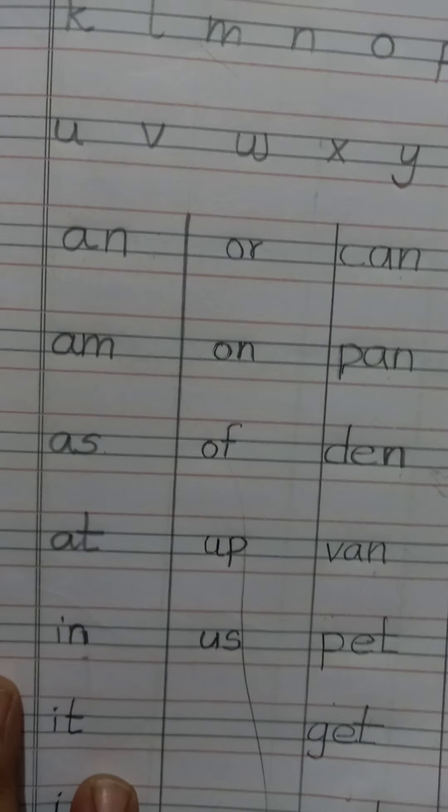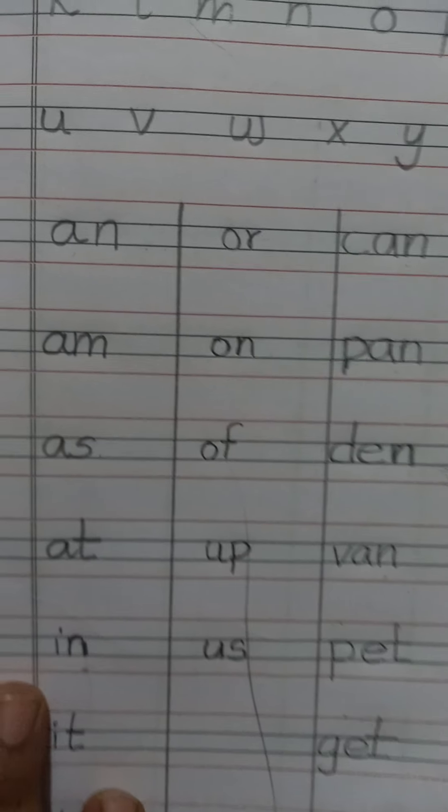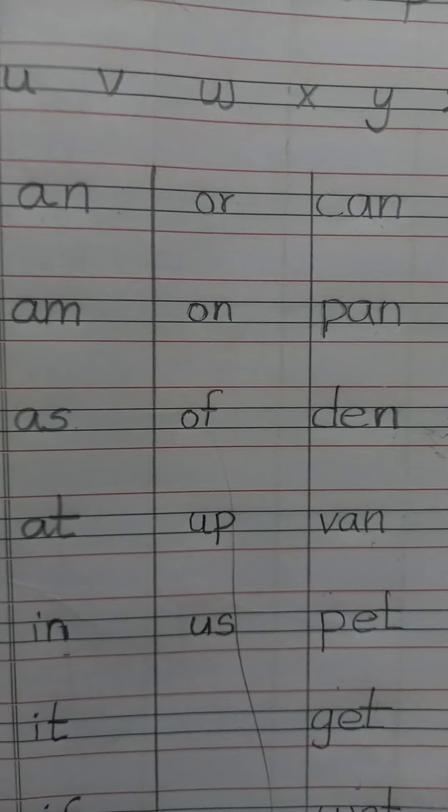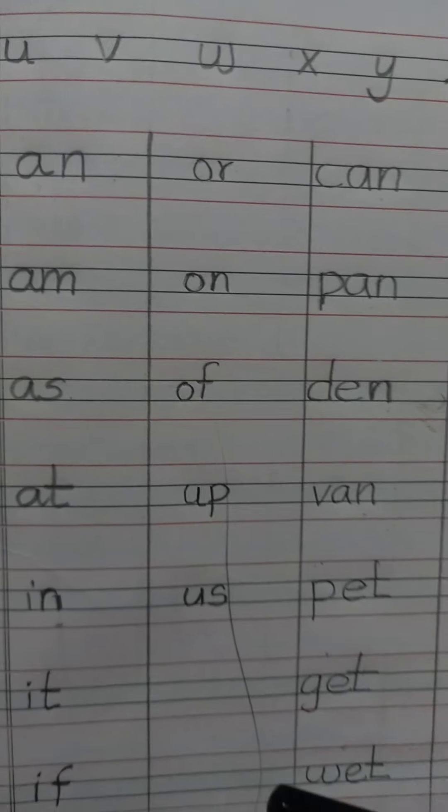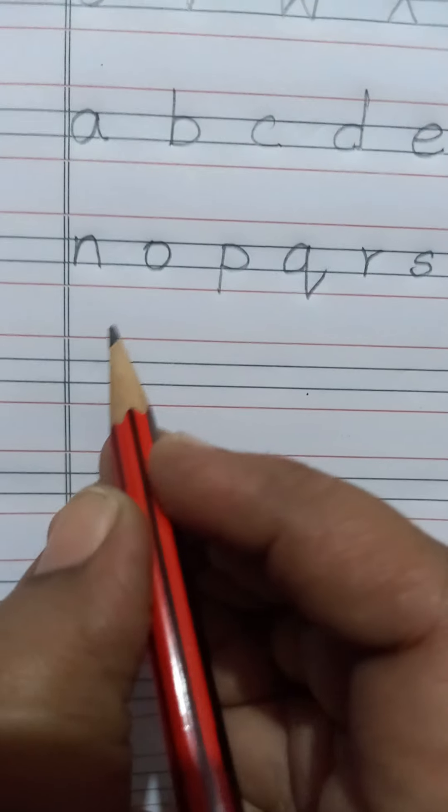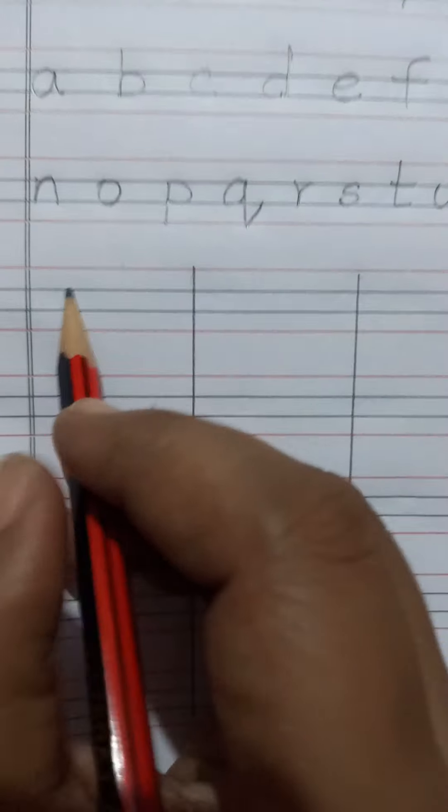Okay children, now we can write three letter words. What are the words? Already we have written. See, already we have written this one. Now we are going to write bag, tan, bad, met. Now we can write, see here.